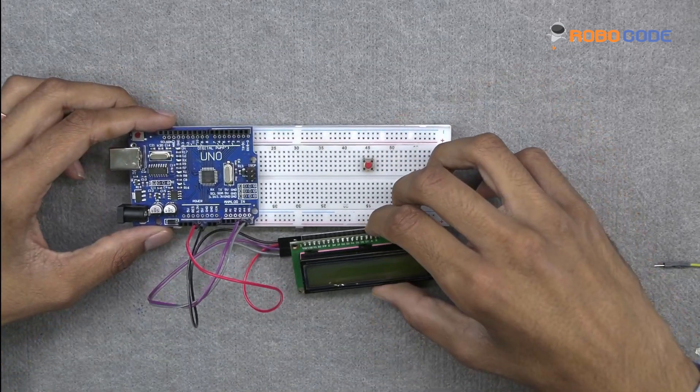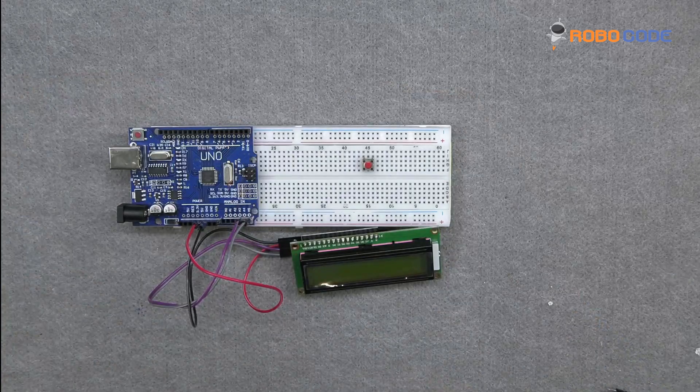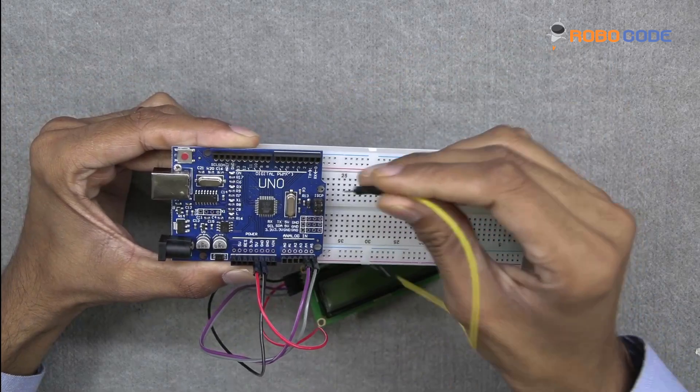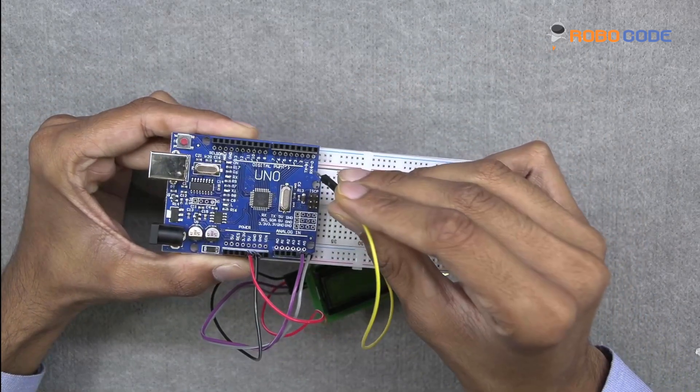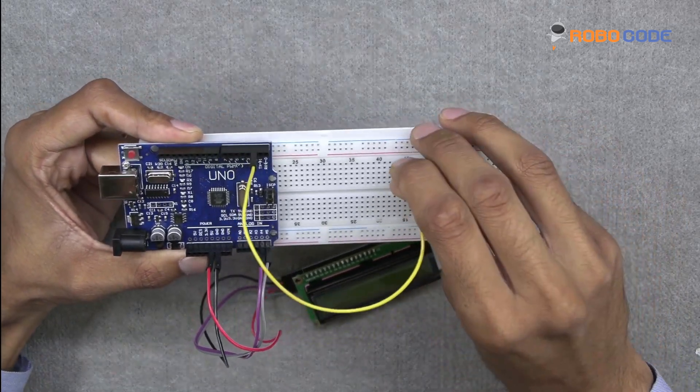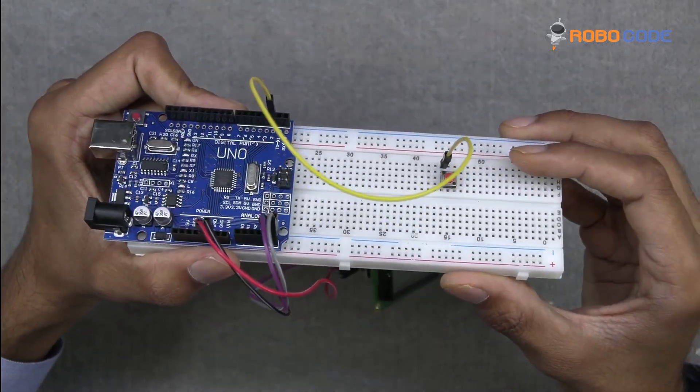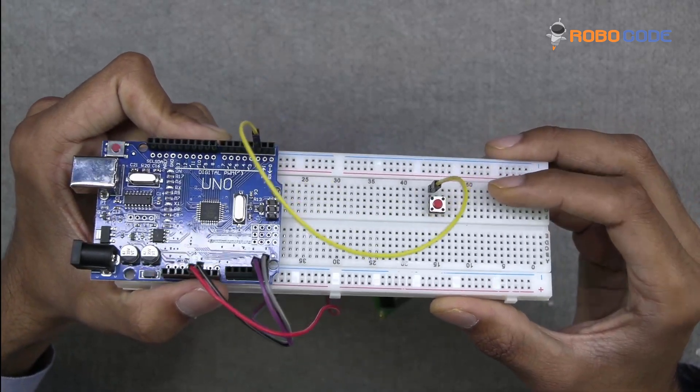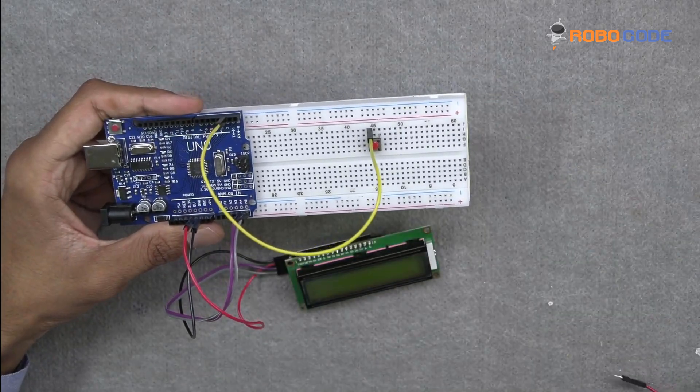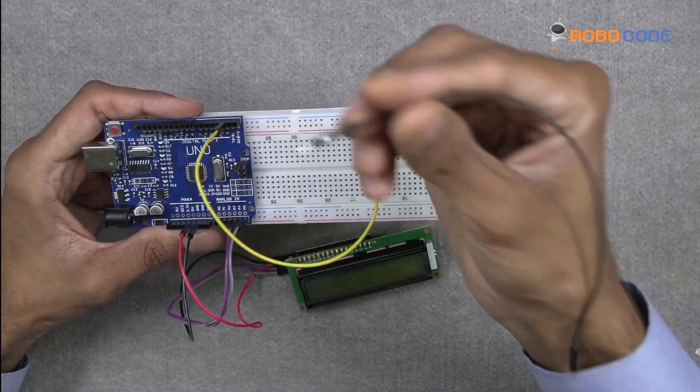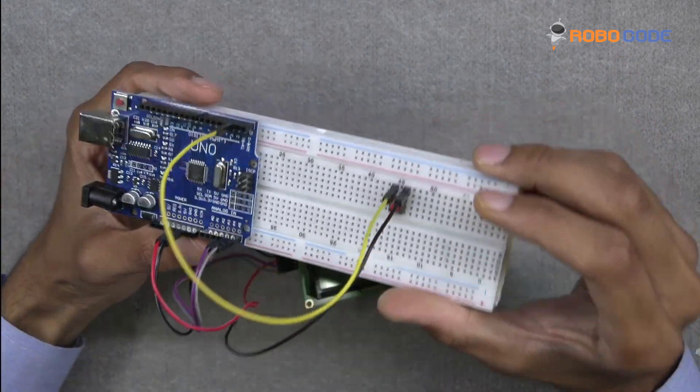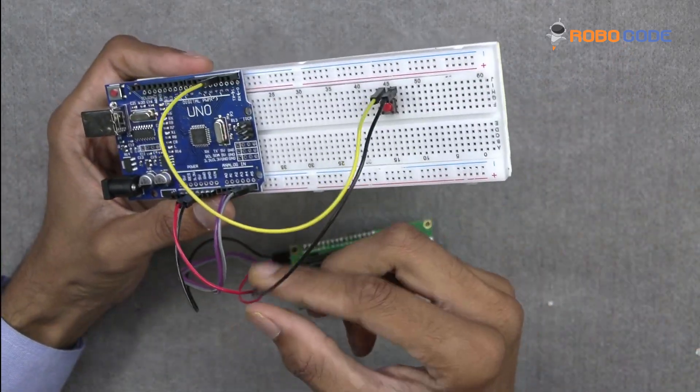Now we will take the jumper wire which is yellow in color. We'll insert it in pin 2 and the other side to one end of the buzzer. Now we'll take the black wire, insert it right next to the black wire which says ground, and connect one side to the buzzer on the breadboard.